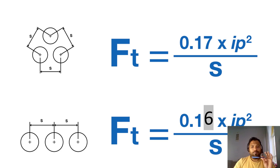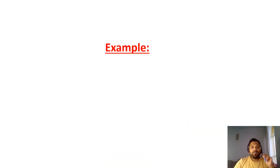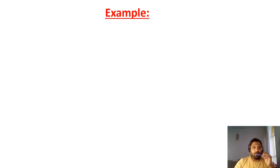So we have two different formations. One is the trefoil format and another one is the flat format. In the trefoil format, the formula is same, 0.17. While your cables are laying a flat format, then you should be calculating this one, 0.16 into Ip square by S. Only difference, very little bit difference between both.